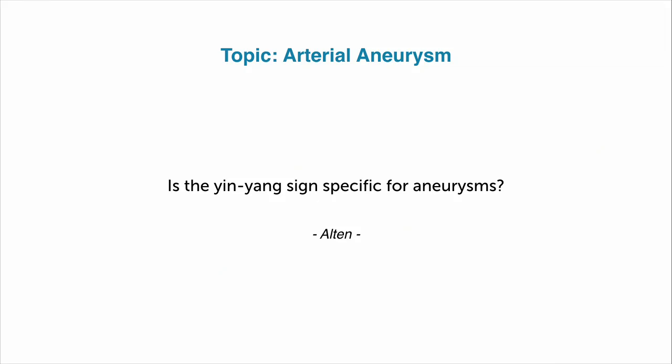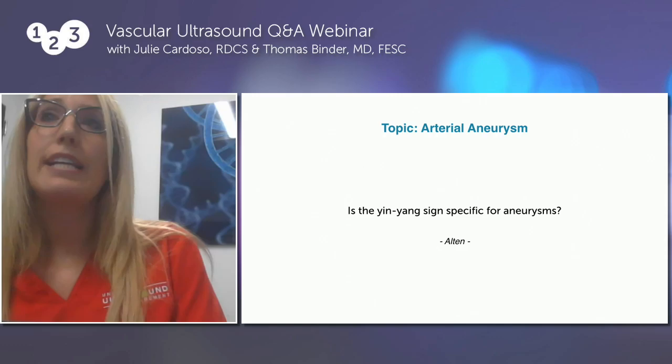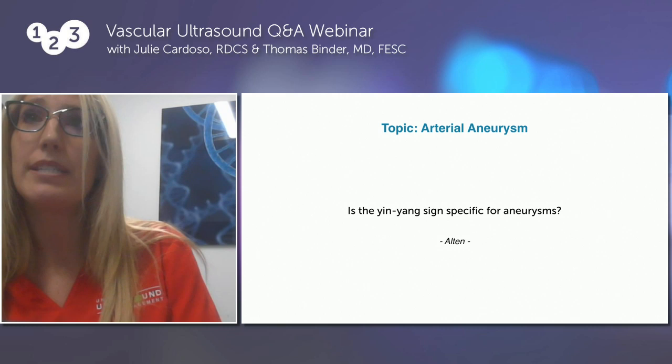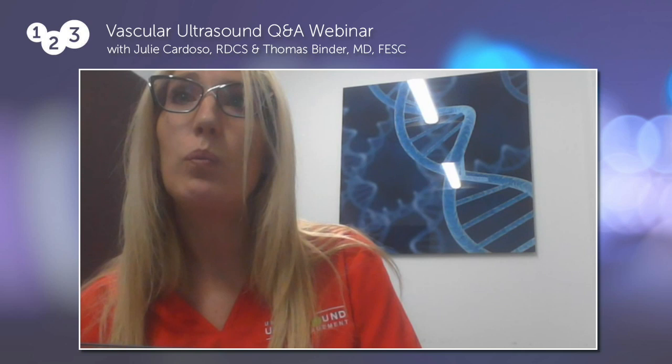Let's turn to the topic of arterial aneurysms. A question from Alton: is the yin-yang sign specific for aneurysms? The yin-yang sign indicates a Doppler shift — basically bi-directional flow. We can get this in a normal vessel, but we particularly correlate it with aneurysms and pseudo aneurysms.